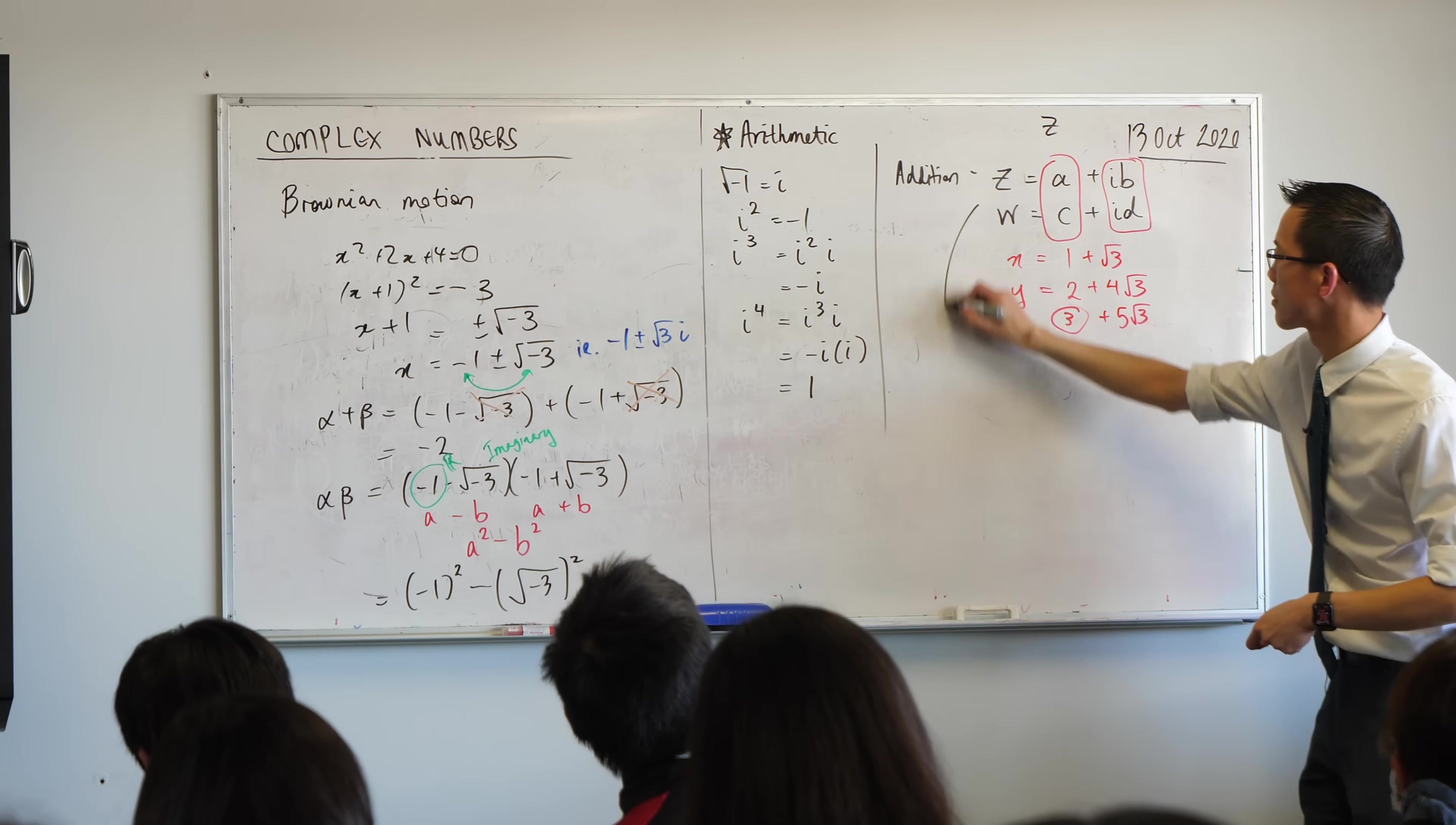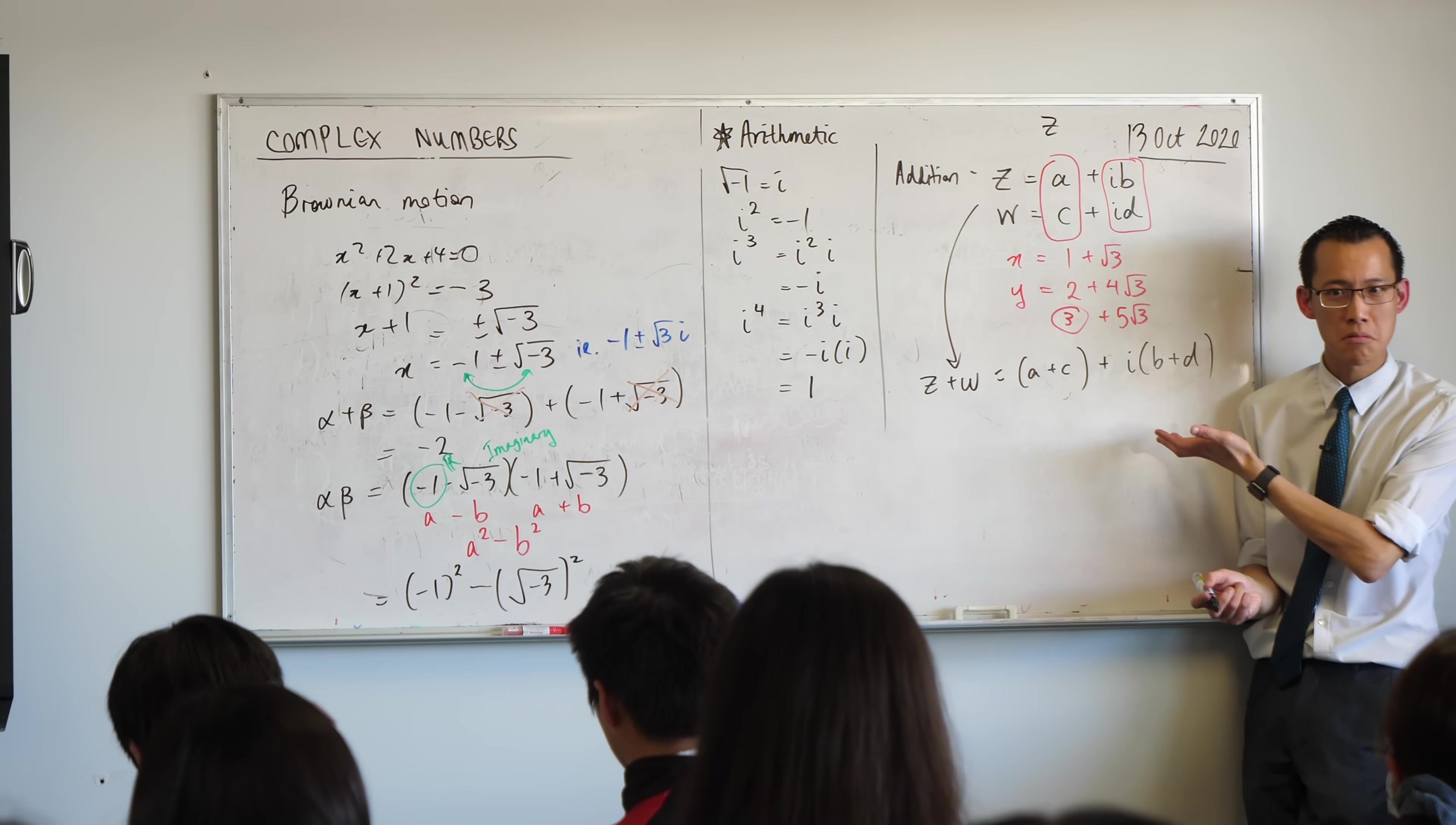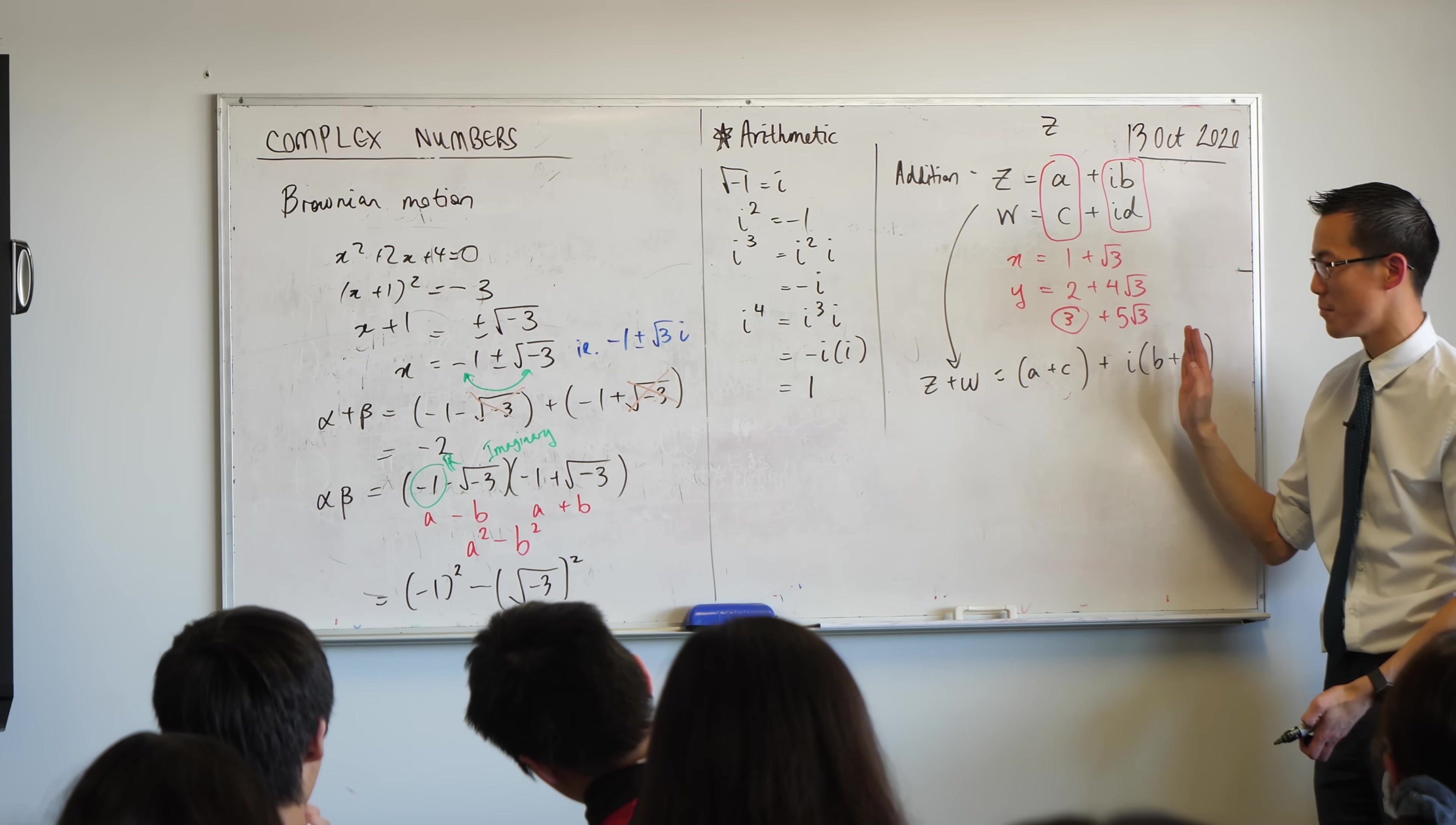Well, in this case, z plus w, you're going to get these real bits out the front and then you're going to get these imaginary bits out the back. I'm going to factor out the imaginary unit because that's kind of why we use it. Does this make sense? So if I swapped out all these root 3s for i's, it would look exactly the same. 1 plus i, 2 plus 4i, you would add them and get 3 plus 5i. I hope you can prove for yourself that subtraction will be the same.